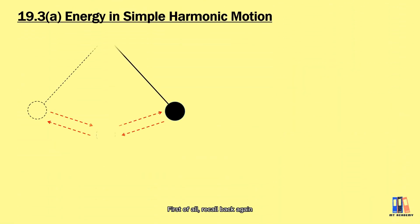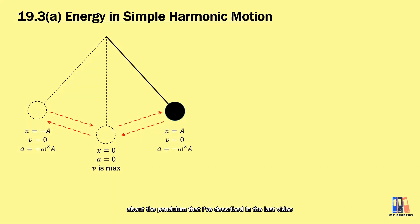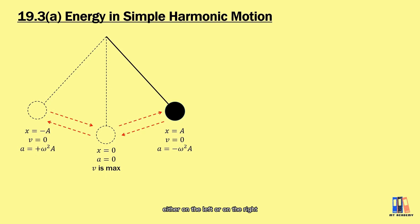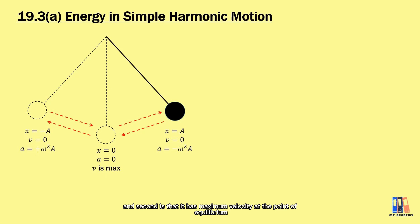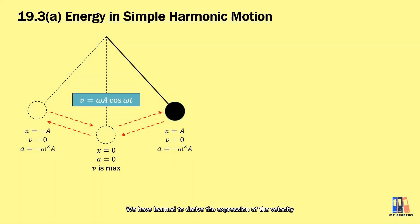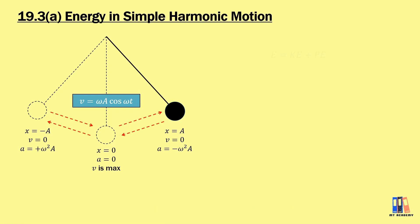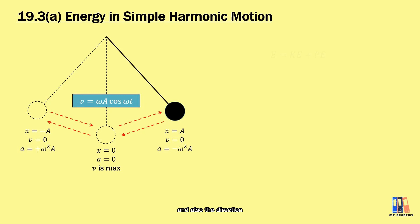First, let's recall the pendulum described in the last video. There are two main points to be clear about in simple harmonic motion. First, when the object is at the amplitude — either on the left or on the right — it has zero velocity. Second, it has maximum velocity at the point of equilibrium. We derived the expression of velocity as v = ωa cos(ωt), so the velocity keeps changing in magnitude and direction.